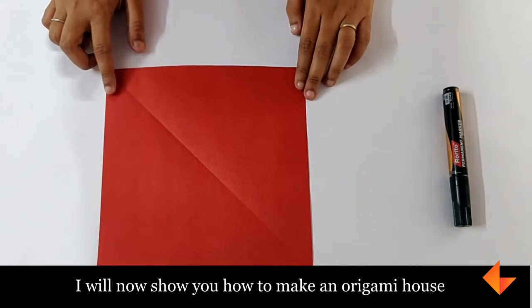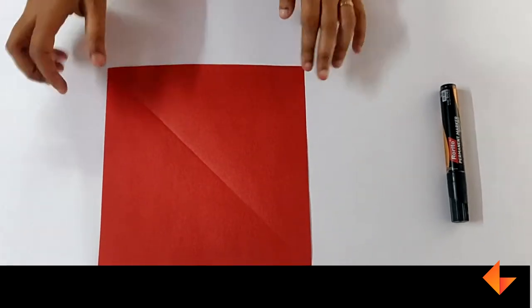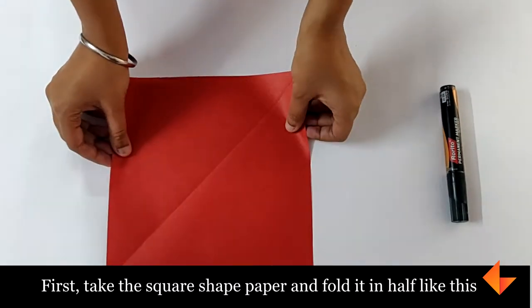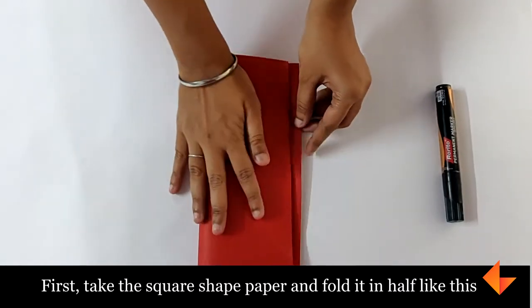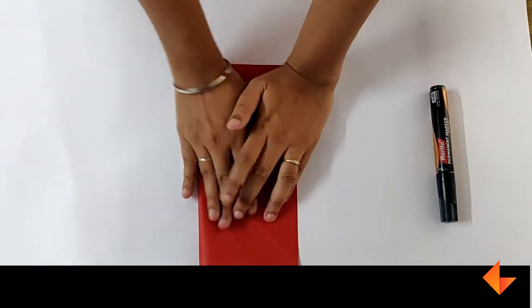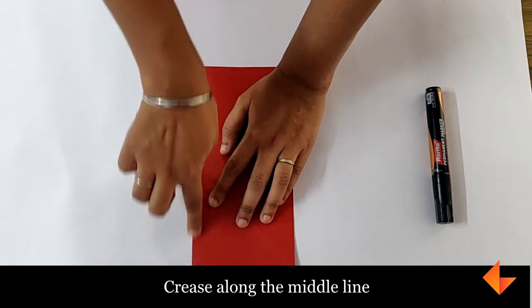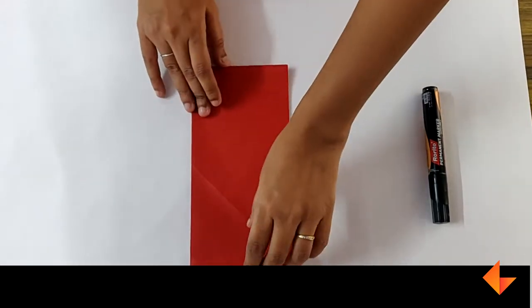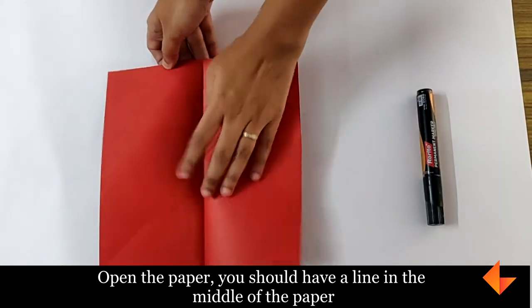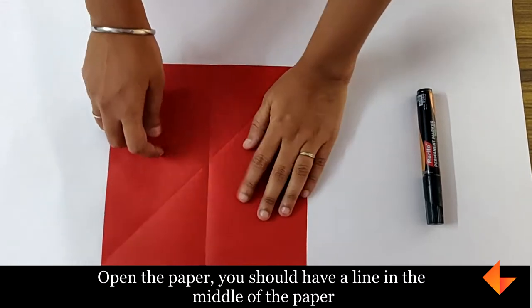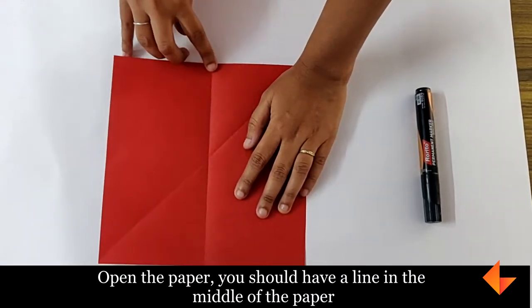I will now show you how to make an origami house. First, take the square-shaped paper and fold it in half like this. Crease along the middle line. Open the paper. You should have a line in the middle of the paper.